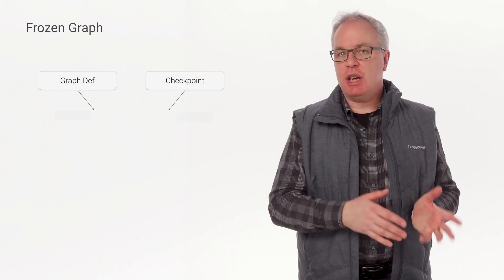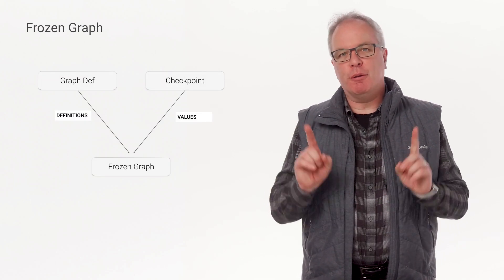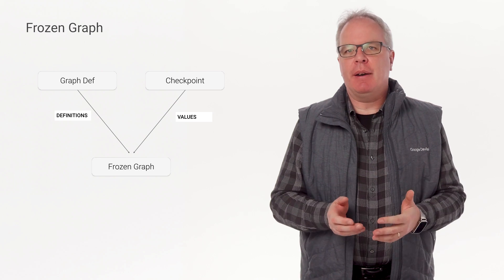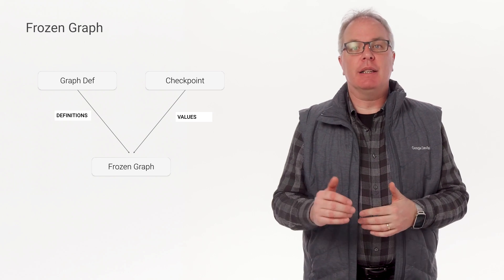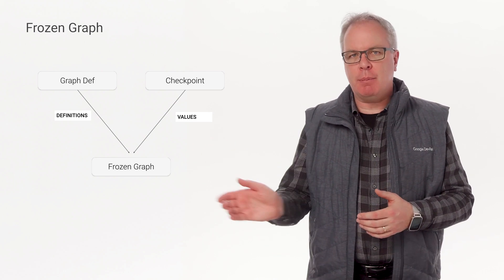There's also a frozen graph def, where the variables from the latest checkpoint file are combined with the graph and turned into constants. This is important in the process of using TensorFlow Lite. You'll see in a moment how you can combine a graph def and a checkpoint to make one of these. The process is called freezing because every variable is converted into a constant with a value read from a particular checkpoint.